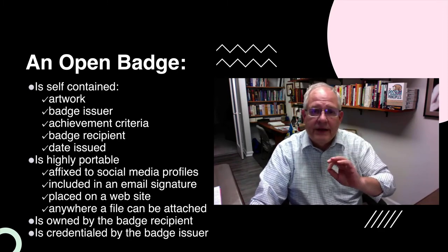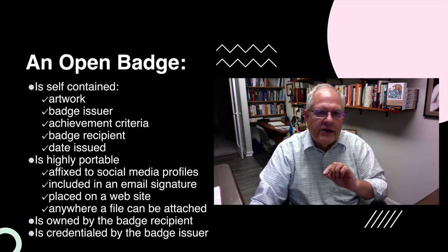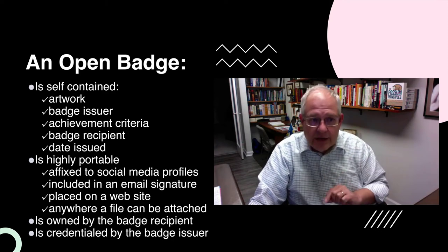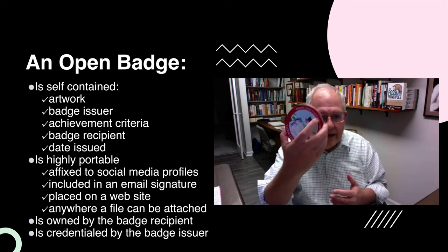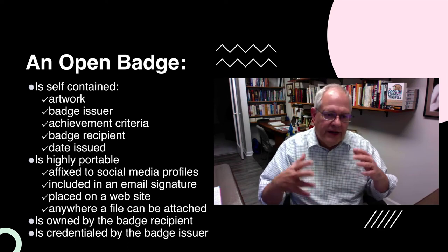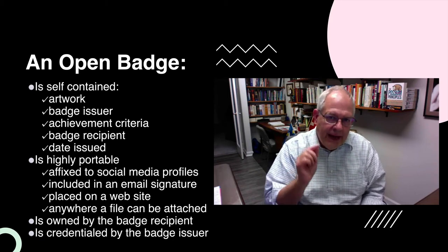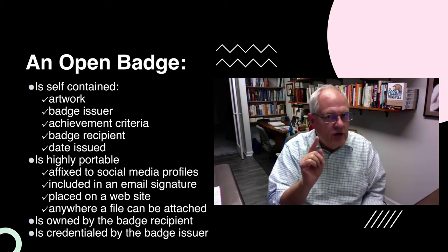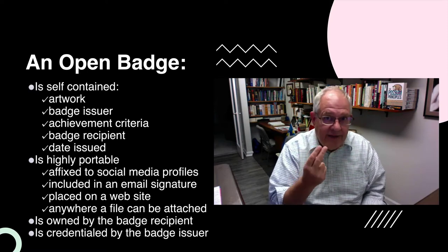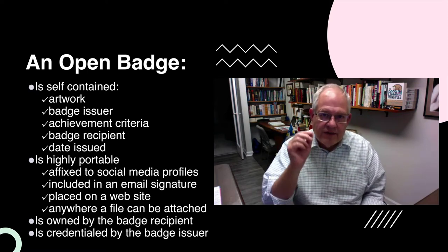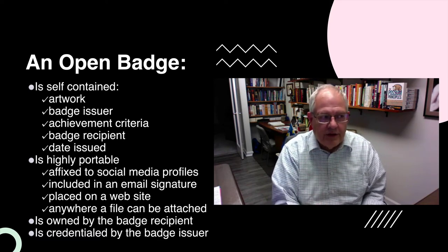That is the way an electronic badge works — you can think of it as the badge having all this metadata inside it. A badge is self-contained. It contains artwork, which tells you what the badge is about. It's issued by a particular badge issuer. The achievement criteria are well documented. It's issued to a particular recipient on a particular date. Because it's electronic, it can be affixed to social media profiles, an email signature, or placed on a website — anywhere you could put a file. The badge is owned by the badge recipient, not the issuer. But behind that badge stands the issuer who says this is what criteria had to be met to earn it.